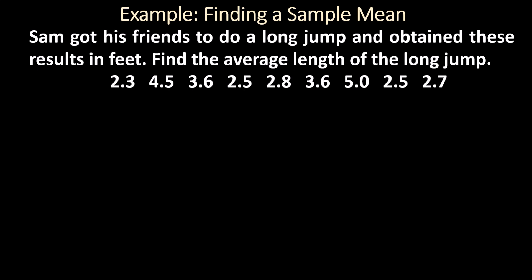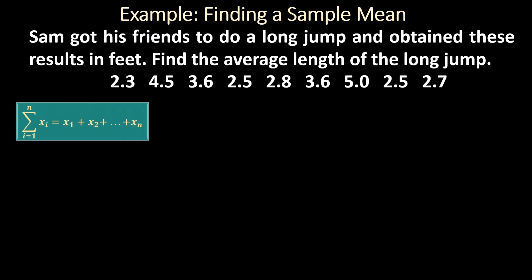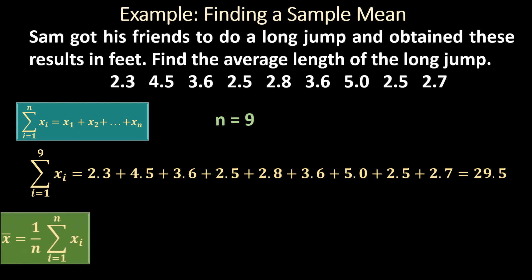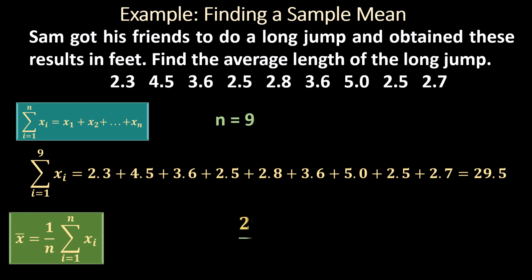Next example: Sam got his friends to do a long jump and obtained results in feet. Find the average length of the long jump. First, find the sum of these observations. There are 9 observations, so n equals 9. The sum from i equals 1 to 9 of x-sub-i is 29.5. To find x-bar, divide by n, which is 9. That gives 29.5 divided by 9, which equals 3.28.